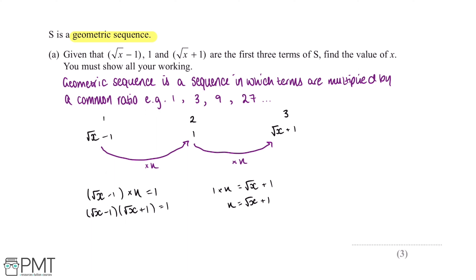If we expand this: √x multiplied by √x gives us x, √x multiplied by 1 gives us √x, −1 multiplied by √x gives us −√x, and −1 multiplied by 1 gives us −1, all equal to 1. We can cancel the two middle √x terms since √x − √x = 0, leaving x − 1 = 1. Adding 1 to both sides gives x = 2.